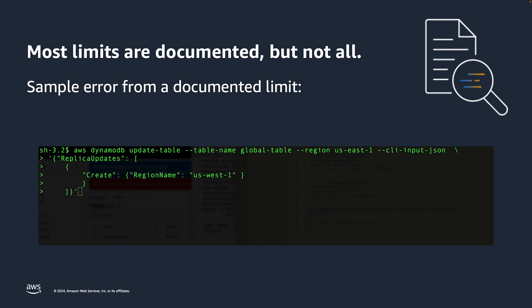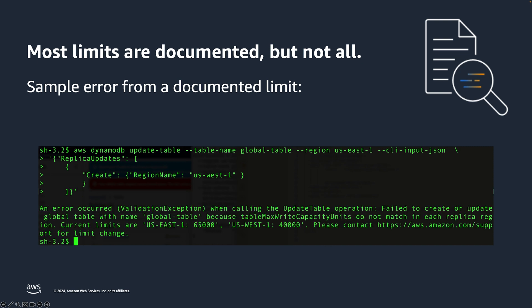We do try to make sure that last situation is a very rare event. An error from the DynamoDB API may look something like this. As you'll see, it says we're unable to add a global table replica because our limits are not set correctly. This specific scenario is more common than you might think, and we will address how to handle this at the end of this presentation.